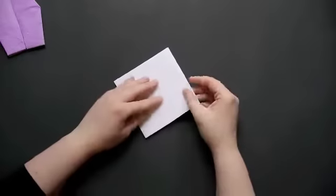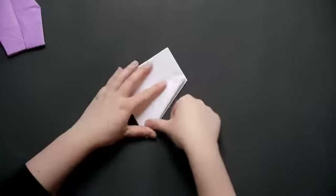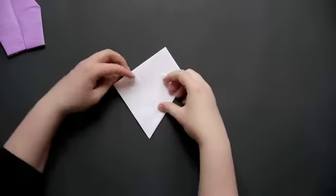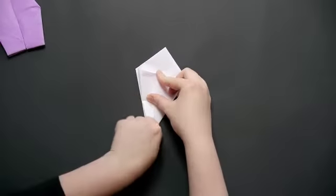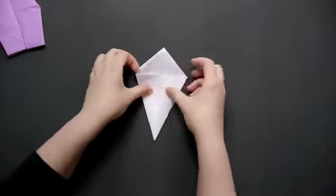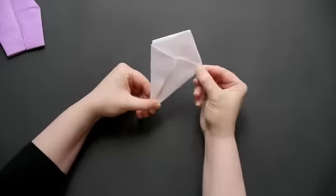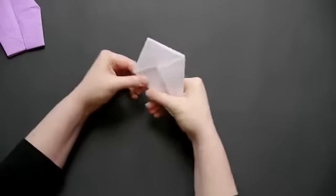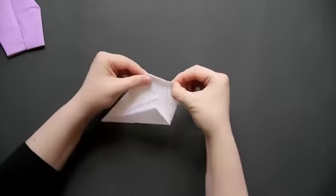Then I'm going to turn over my paper and do the same thing on the other side, holding each side to the center. So that I should have something that looks like a kite. This is a good time for you to go over your creases one more time to make sure they're really sharp.